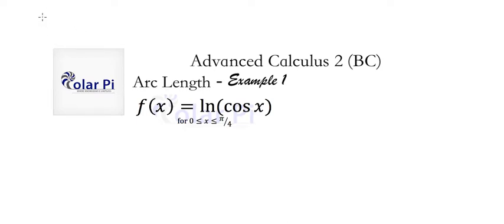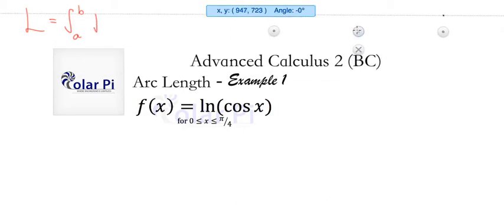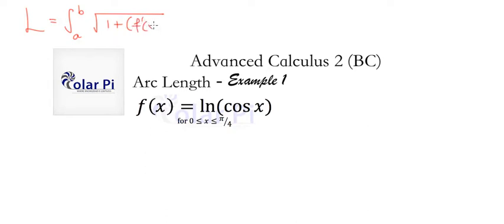The formula we derived in Example 0 said that the arc length L from x equals a to x equals b is the integral from a to b of the square root of 1 plus f prime of x squared dx. All we have to do in this example is just execute this integral.